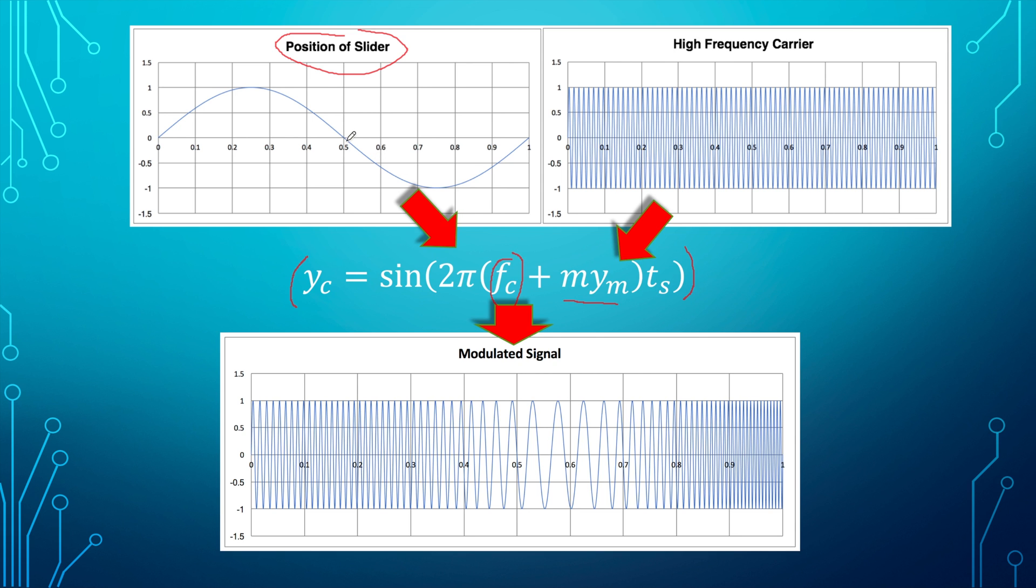When ym, which is the position of our slider, becomes a negative value, it will actually lower the frequency of our carrier.